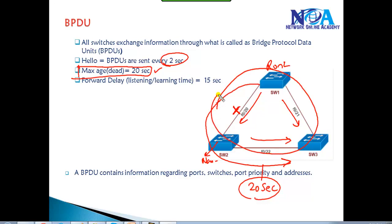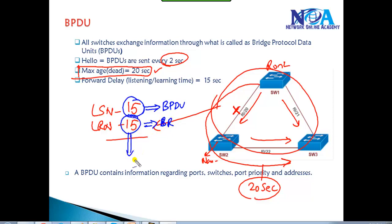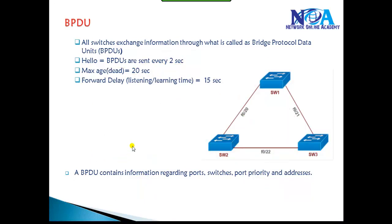The entire STP process happens within a time frame of 30 seconds, through listening and learning stages. When you power on a switch for the first time, every port goes through listening state, where it listens to BPDU messages to decide the root bridge, root ports, and designated ports. This entire process happens within 30 seconds before ports are placed into either forwarding or blocking state.